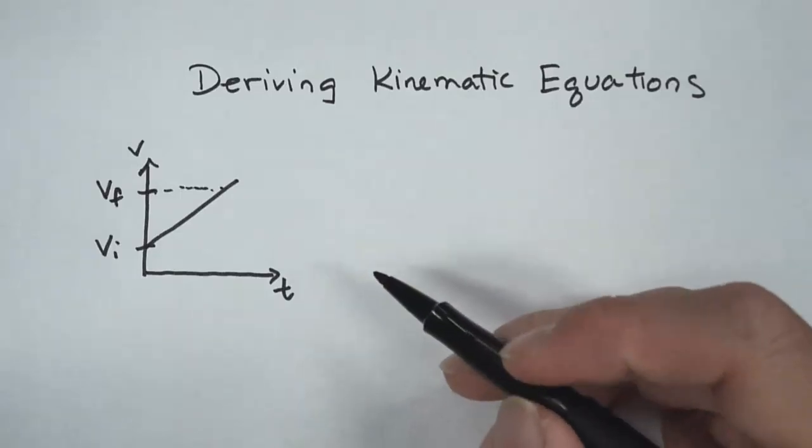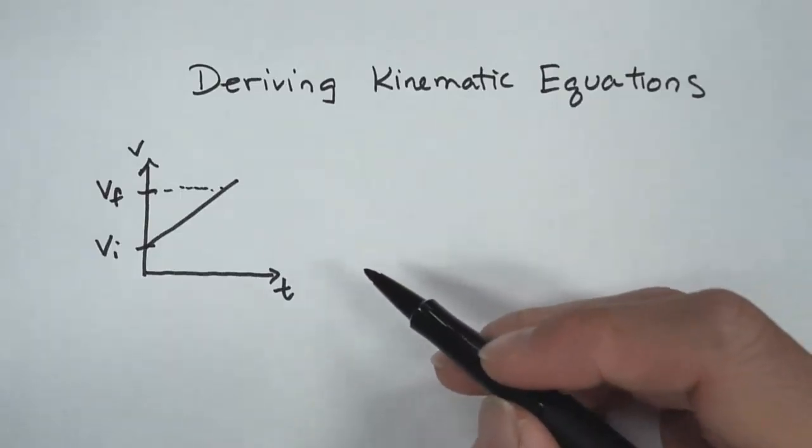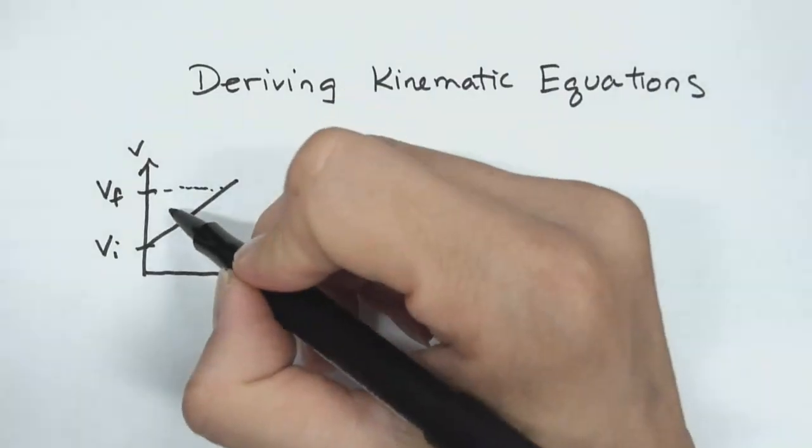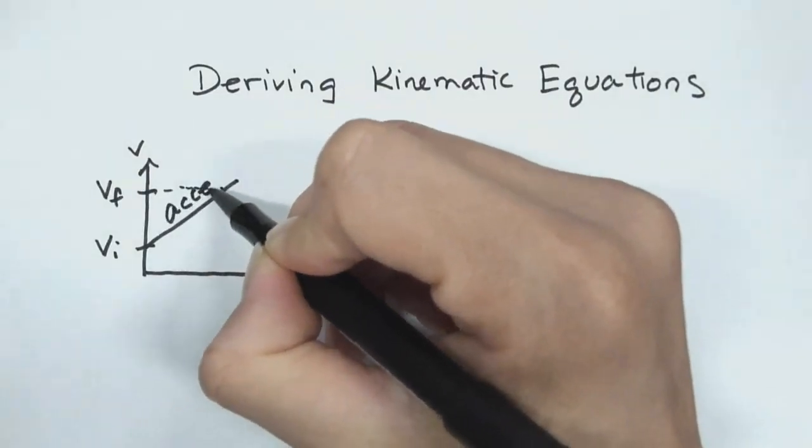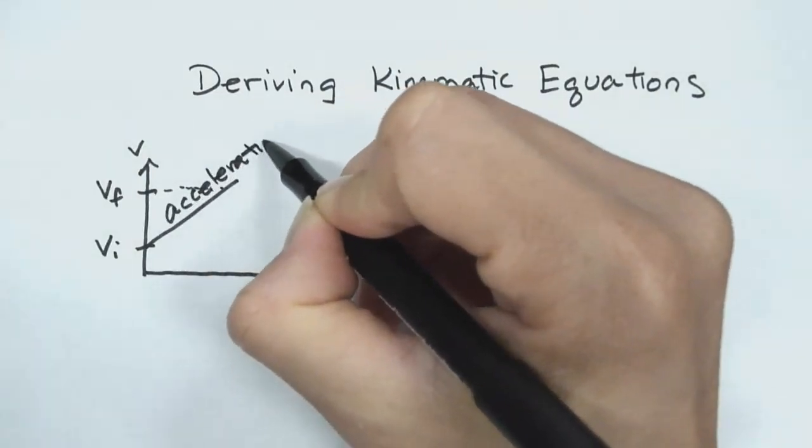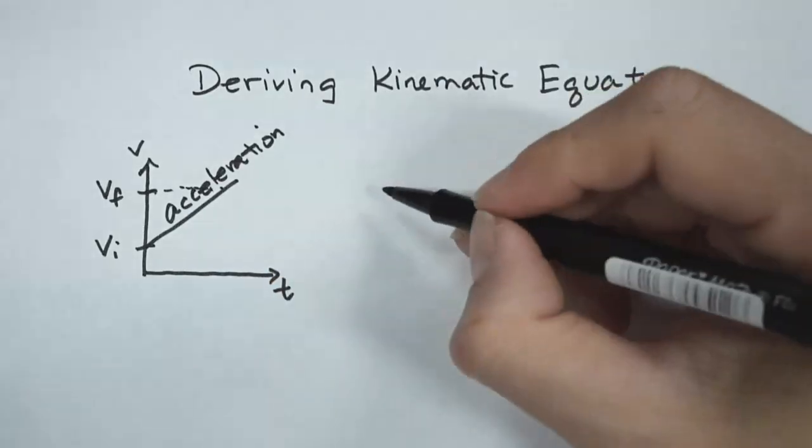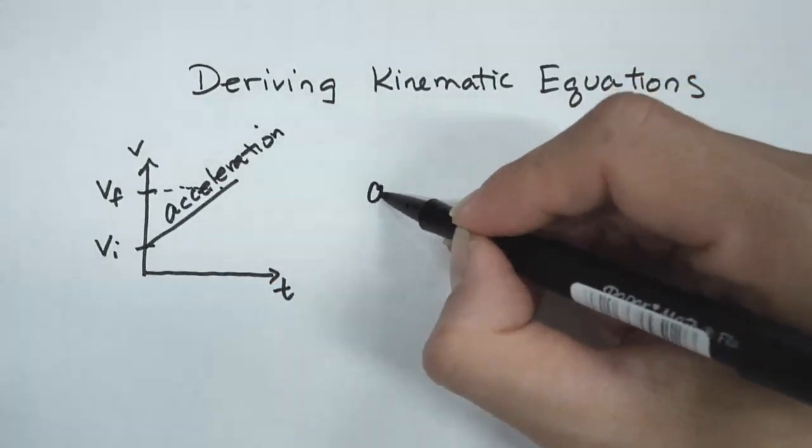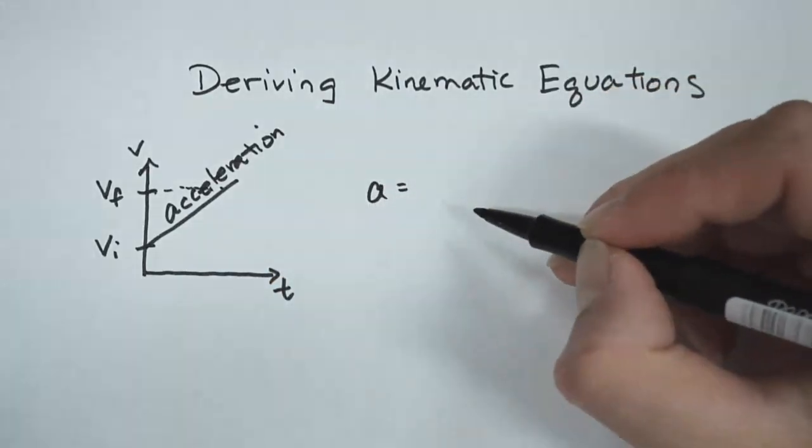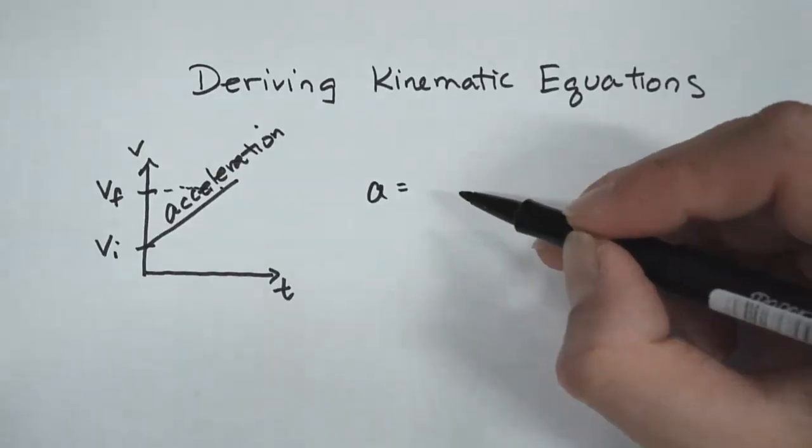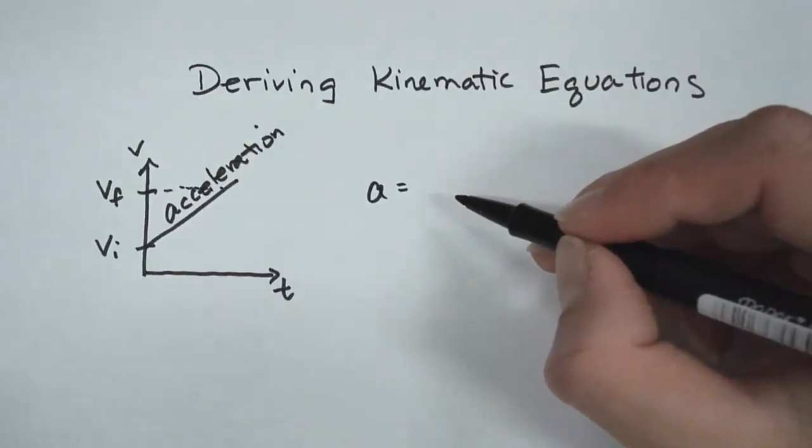I'm going to first start with what the slope on a velocity graph represents. So it represents the acceleration.